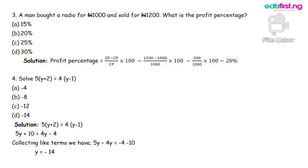Question 4: Solve 5 open bracket y plus 2 close bracket equals 4 open bracket y minus 1 close bracket. Solution: We start by opening the bracket. We have 5 multiplied by y, which will give us 5y, plus 5 multiplied by 2, which will give us 10, equals 4 multiplied by y, which will give us 4y, minus 4 multiplied by 1, which will give us 4.